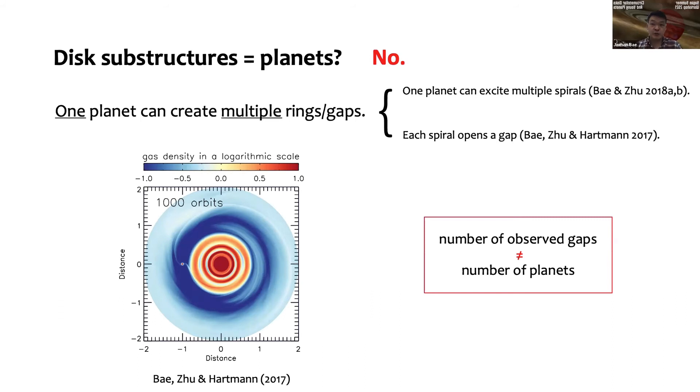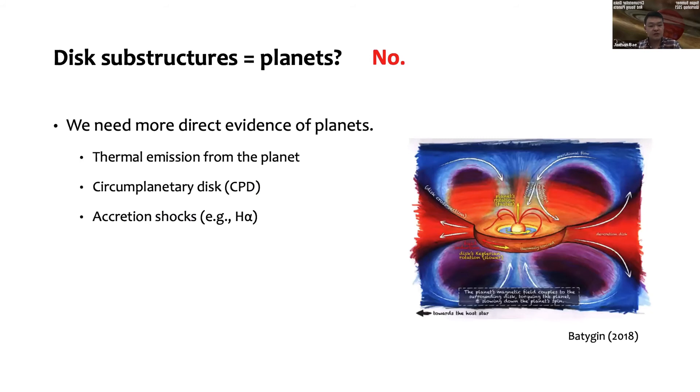What that means is that when you look at the image, we see multiple rings and gaps. Let's say you have three gaps from your observation. What does that mean? You can think that there are three planets, one in each gap, but that may not necessarily be the case. One planet can open two gaps, three gaps, four gaps. We cannot directly connect planets to these substructures—there's no one-to-one connection between them.